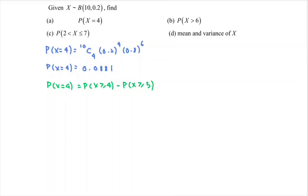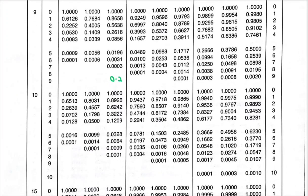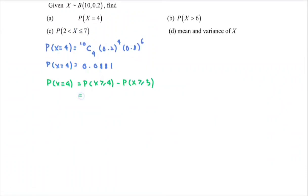By referring to the table where n is equal to 10 and probability of success is equal to 0.2, under the column 0.2 with n equal to 10, we are interested in 4 and also 5. For 4, we have 0.1209, and for 5, we have 0.0328. Substituting: 0.1209 minus 0.0328 gives the probability that X is equal to 4, which equals 0.0881.